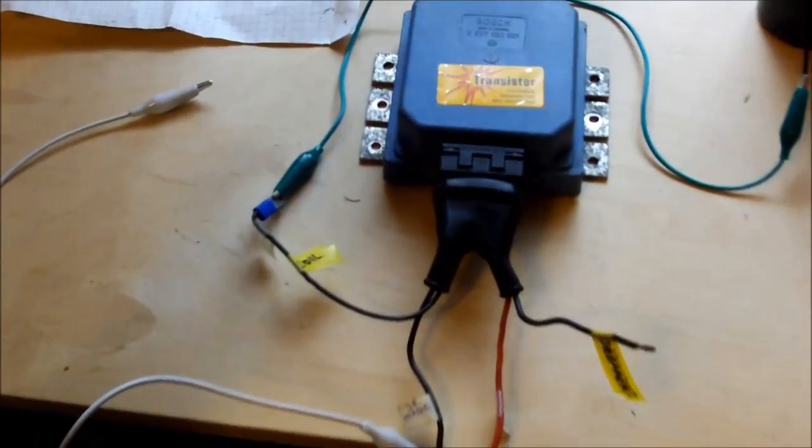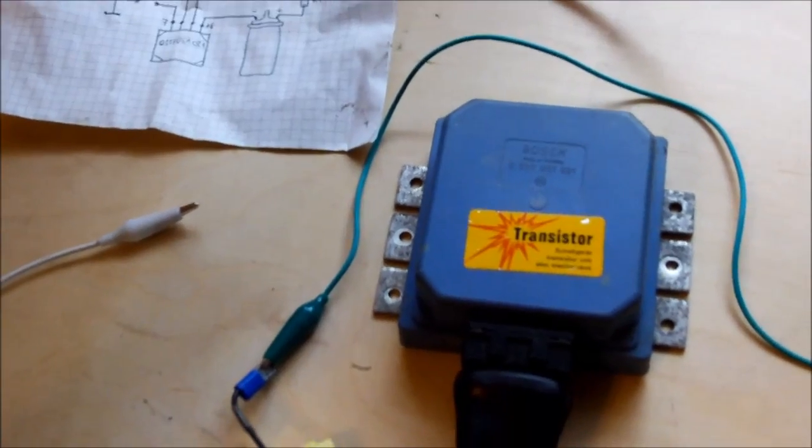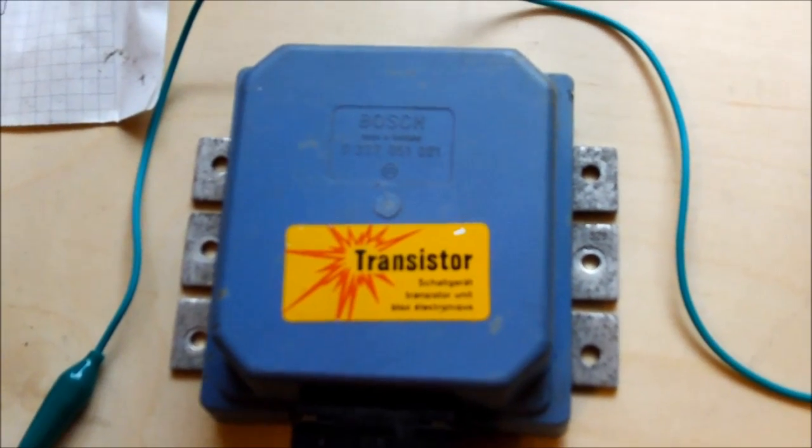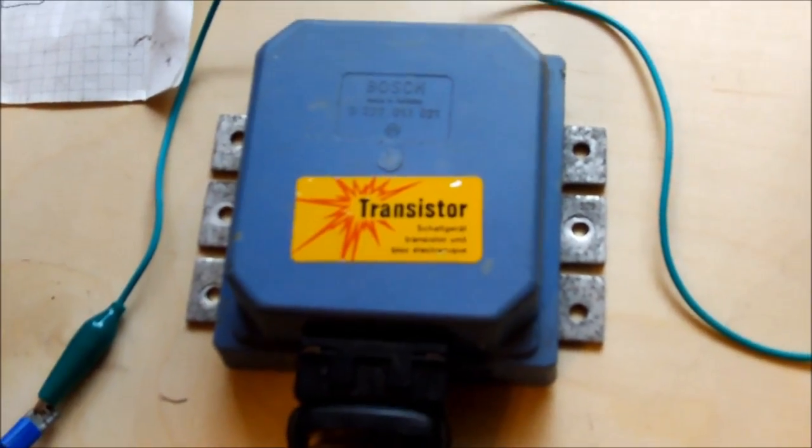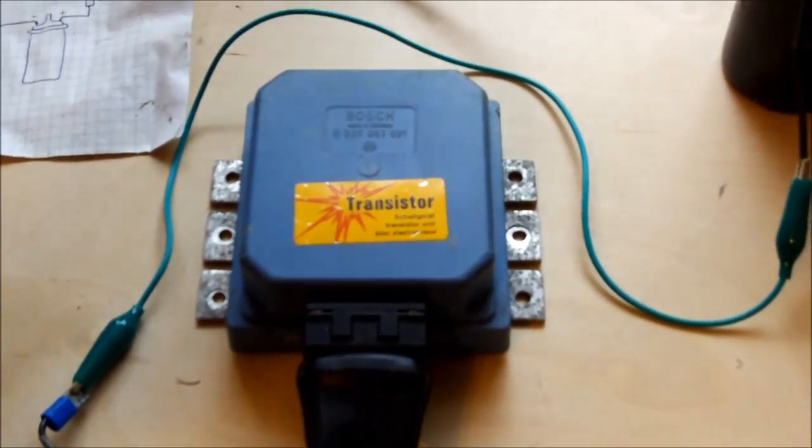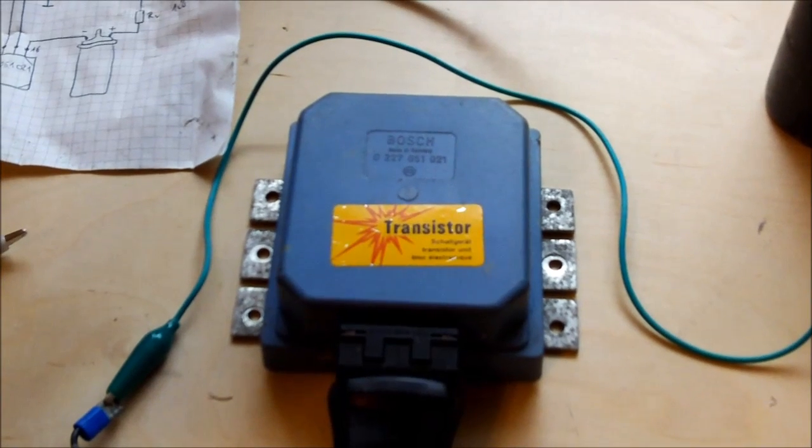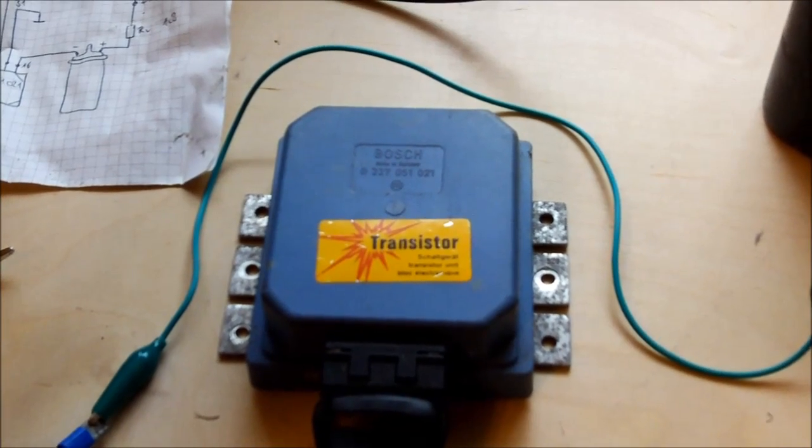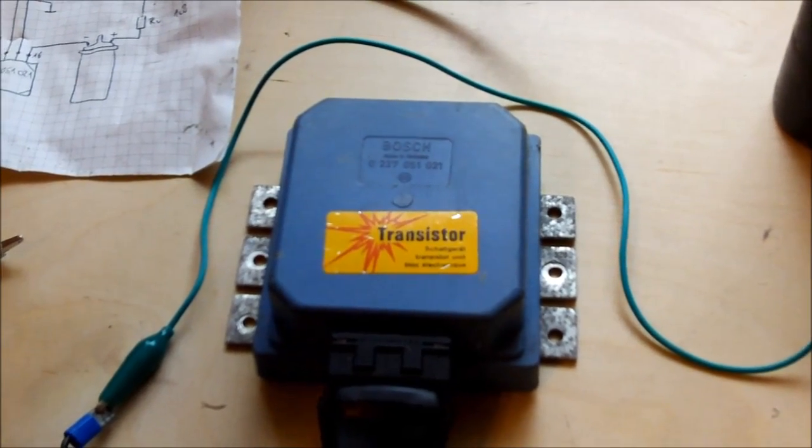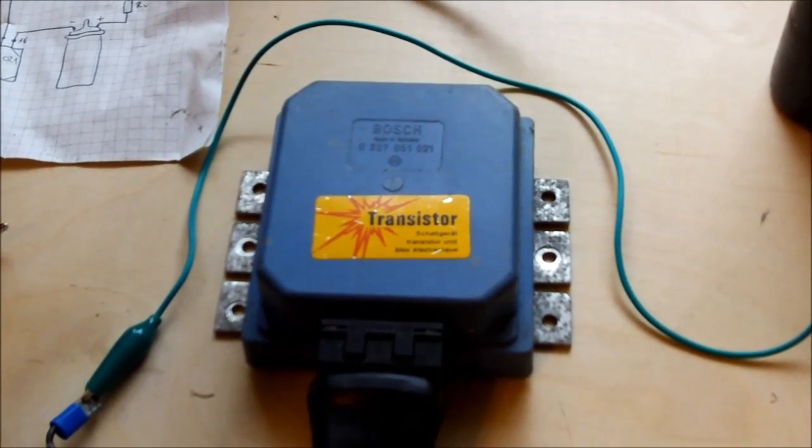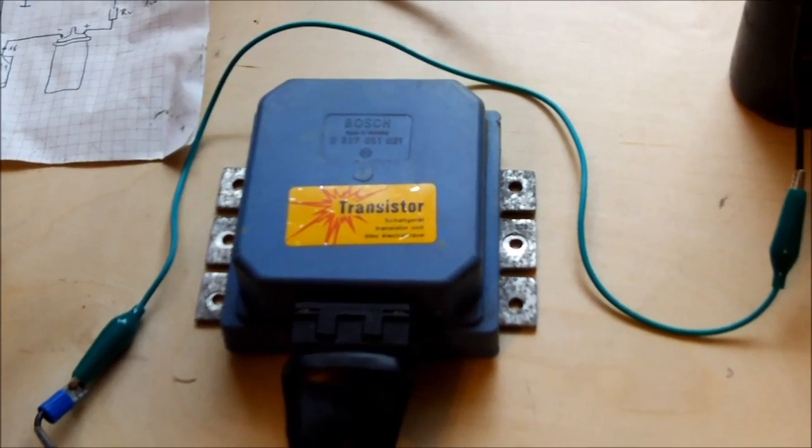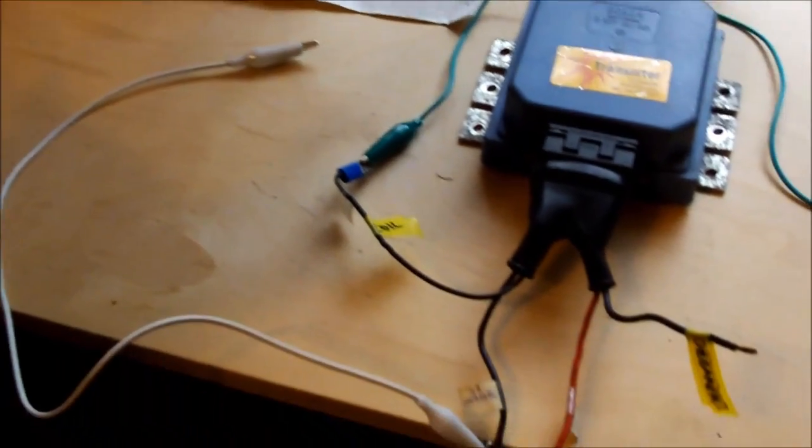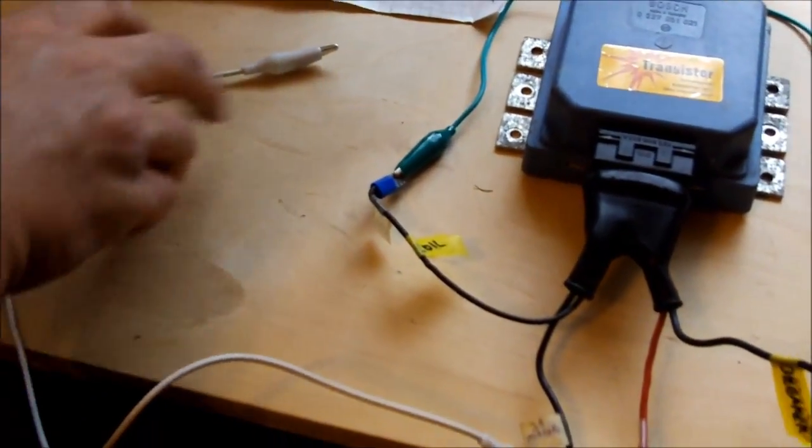And here we have the setup to check an old Bosch ignition module. It is called Schaltgerät. This is one of the first transistor ignition modules which were introduced by Bosch in the 70s. And the strange thing of this device is it is not controlled by an inductor, it is controlled by points.